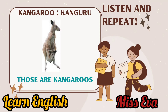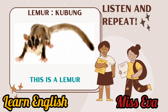Kangaroo. Those are kangaroos. Those are kangaroos. Now you repeat. Lemur. This is a lemur. Yes, this is a lemur. Now you repeat.